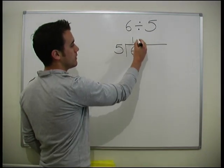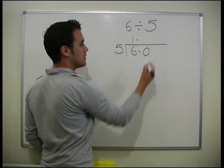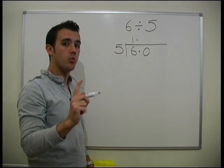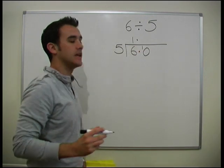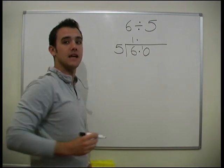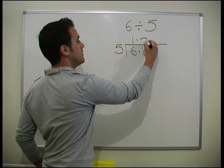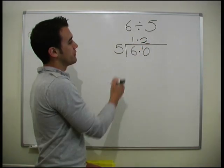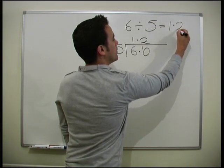So what we do is we now know we put our decimal point in and down here we draw a 0. We know 5 goes into 6 once with a 1 left over, so we draw 1 in here. We've now got 10. Now, how many fives go into 10? 2 fives go into 10, so we write a 2 up here. Is there a remainder? No, there isn't. So that's the answer — 1.2.